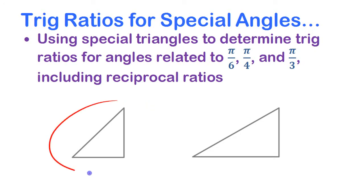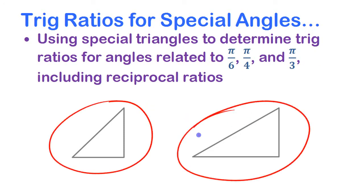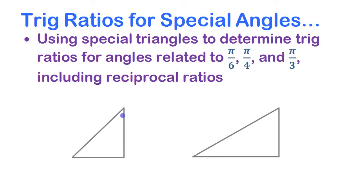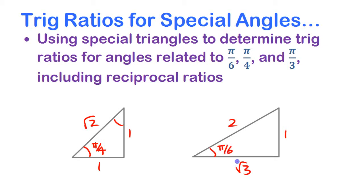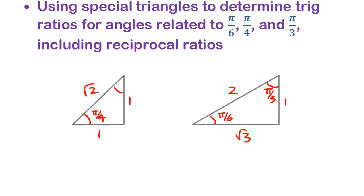We're going to use these two triangles, which you have likely seen before. The first one is a 1-1-√2 triangle, where both angles are π/4. The other triangle is a 1-√3-2 triangle, which has angles of π/6 (30 degrees) and π/3 (60 degrees). We'll use the ratio of the sides in those triangles to come up with trig ratios for these special angles.